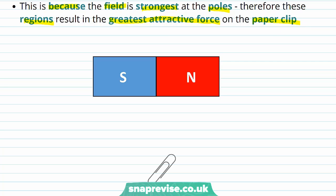So here's our paper clip. It's experiencing a force towards the middle, F1, a slightly greater force F2, but the greatest force of all, F3, is towards the pole.